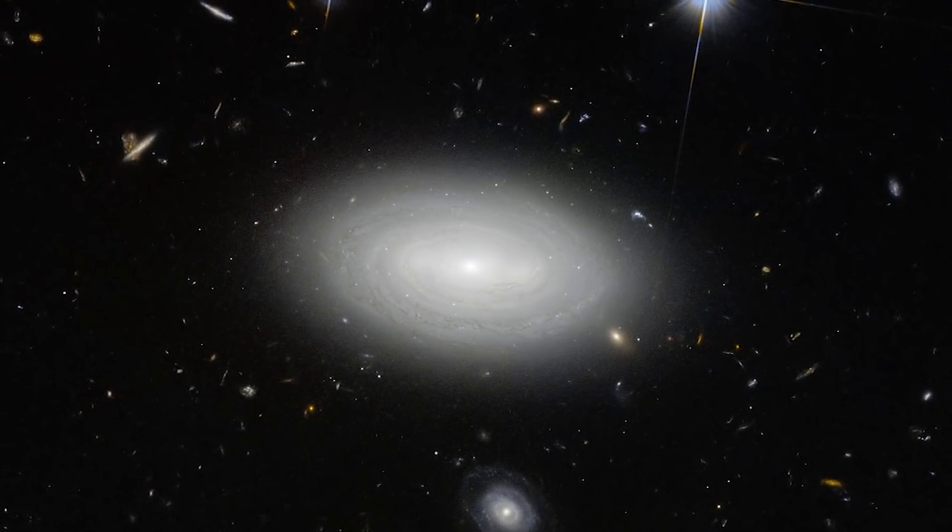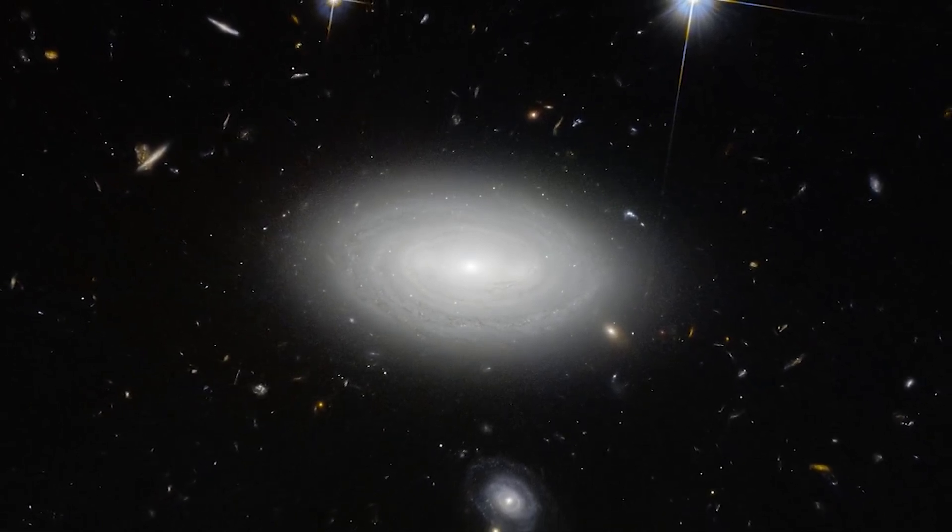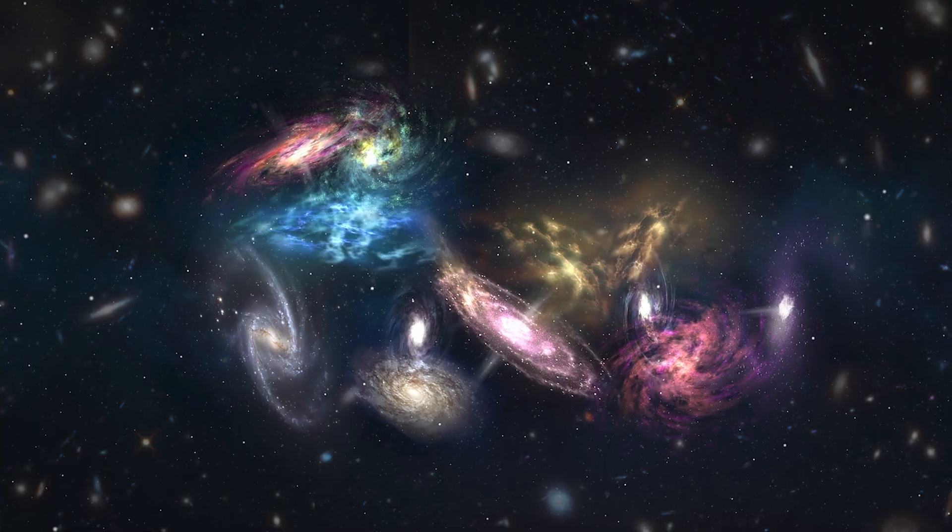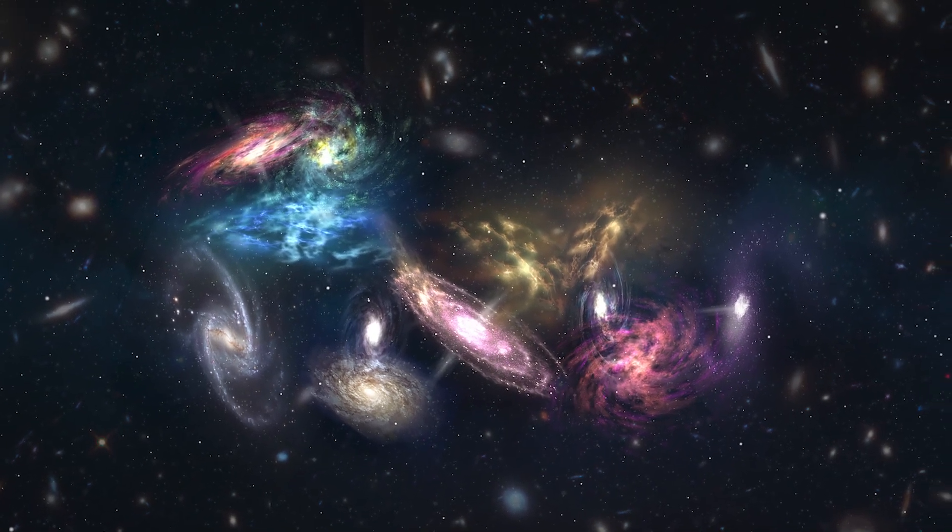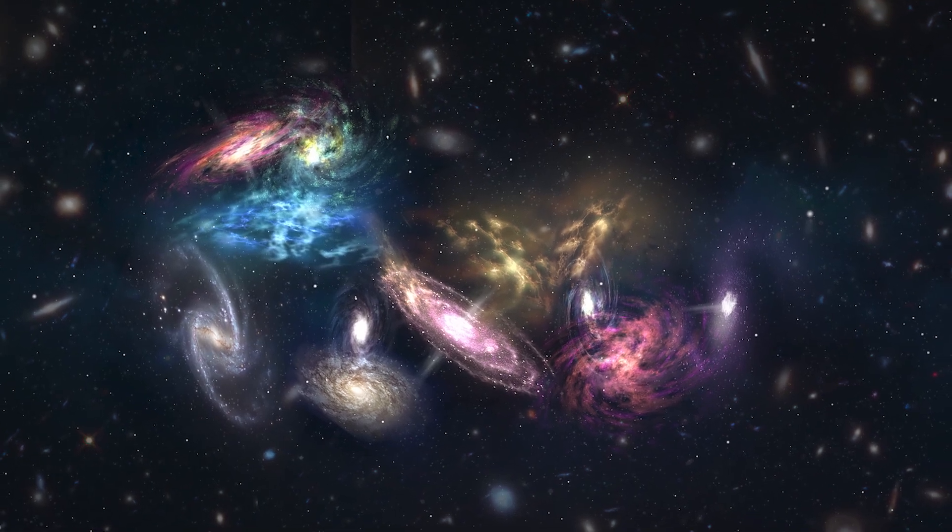Astronomers eventually determined that the void had just a few galaxies inside it. It has been proven to have 60 galaxies in an area that might have had 2000 by 1997.